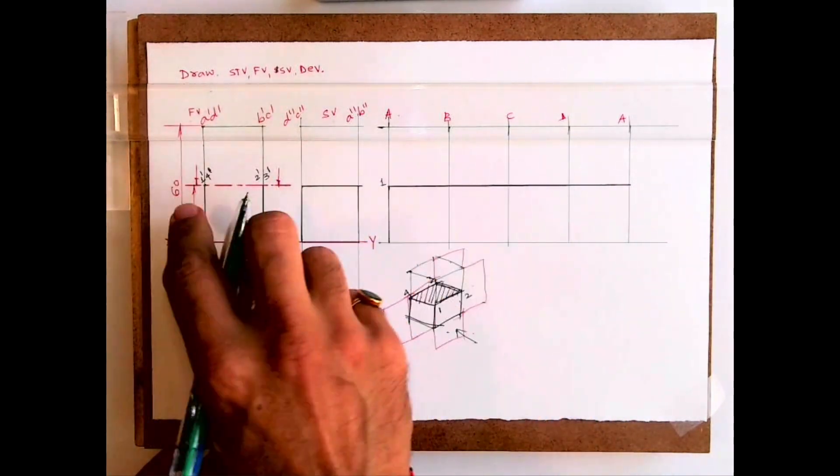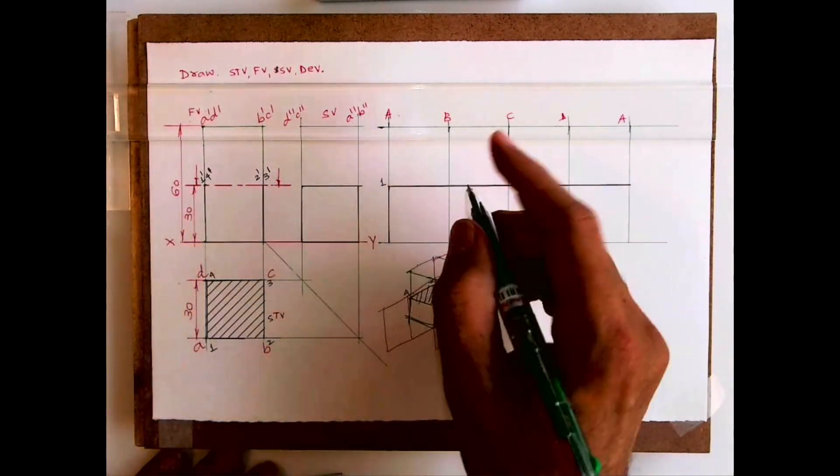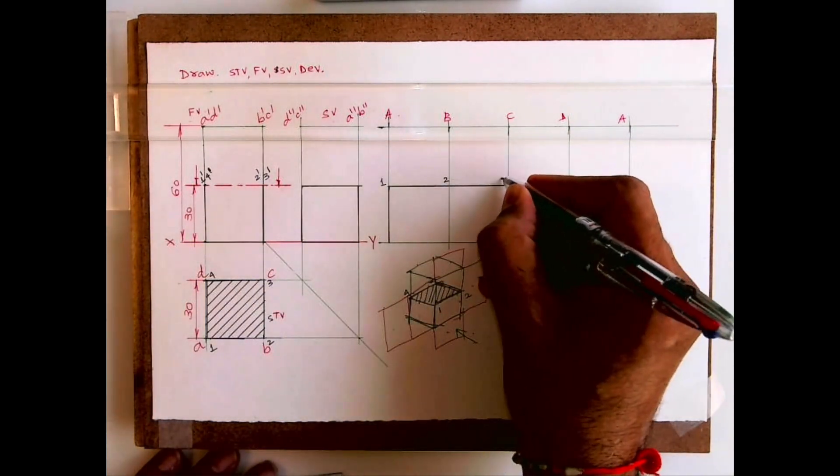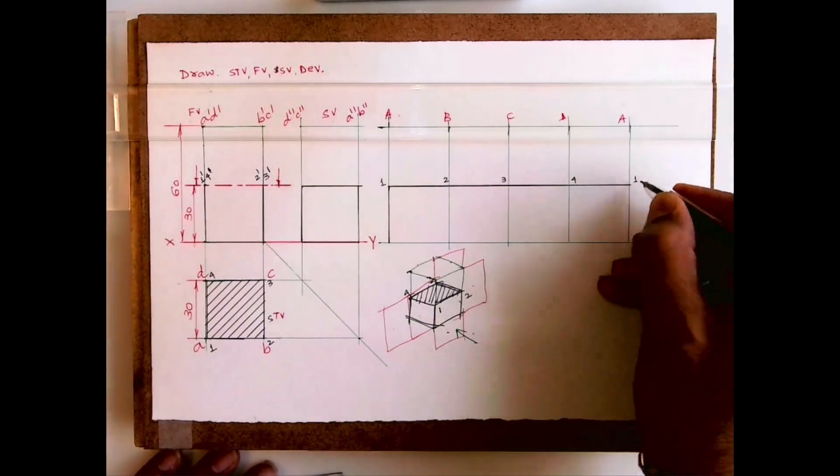If you know the name, then this will be 1 on A, it will be 1 on B, it will be 2, 3, 4, and 1.